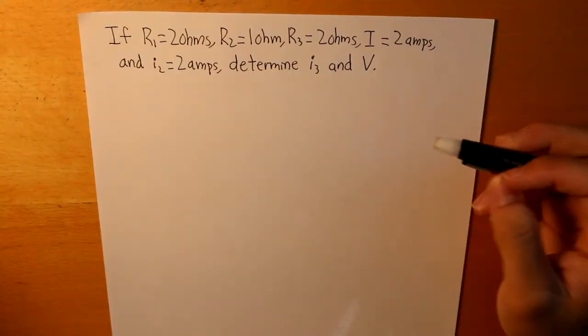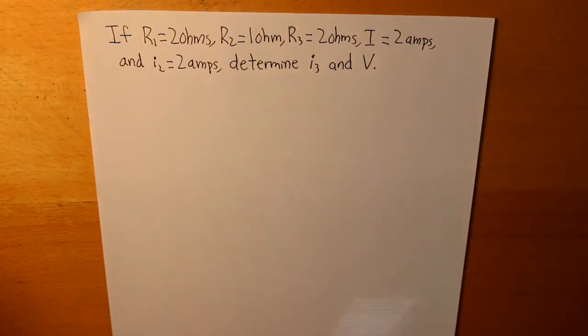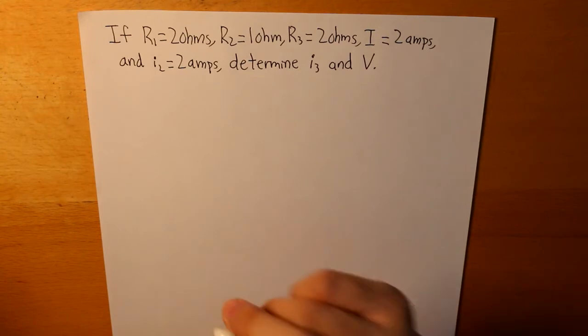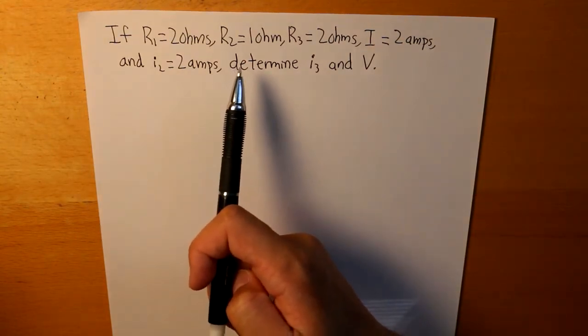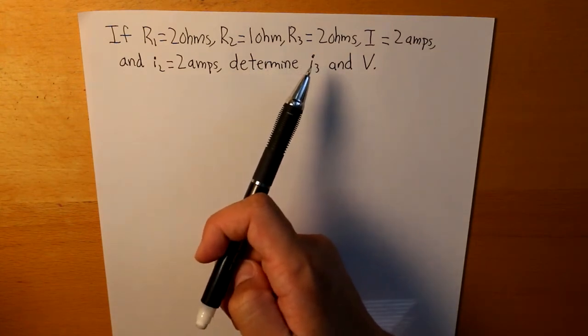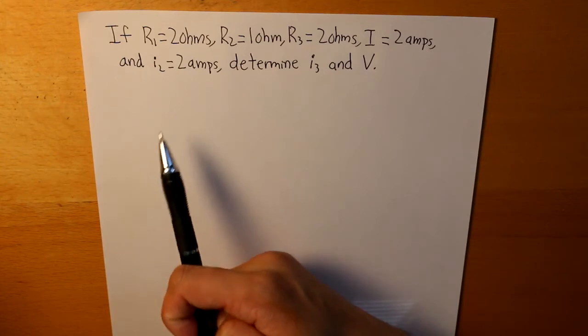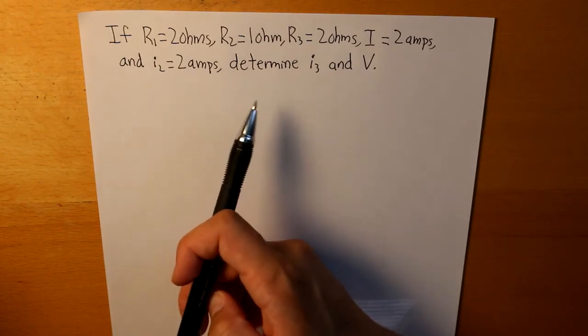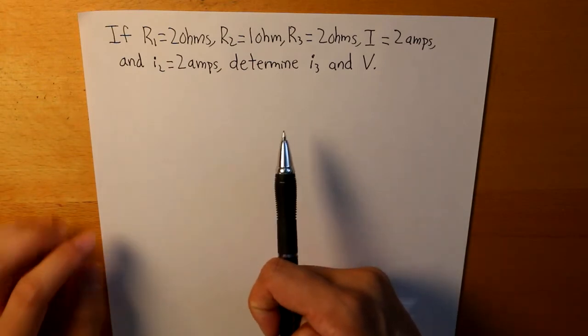So here we have a practical example on solving unknown elements in a circuit using nodal analysis. So the question is, if R1 is equal to 2 ohms, R2 is equal to 1 ohm, R3 is equal to 2 ohms, the current source I is equal to 2 amps, and I2 is equal to 2 amps, determine what I3 and V are. So let's solve for I3 first.